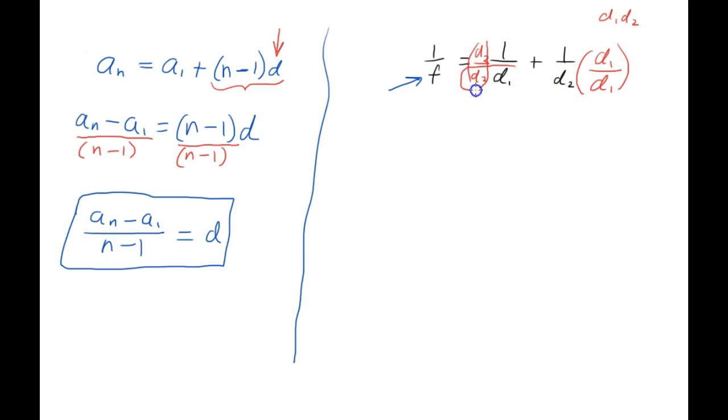Now look at this we've got our lowest common denominator in each of the fractions and up in the numerator what we have is d sub 2 plus d sub 1. In the denominator we have d sub 1 times d sub 2.